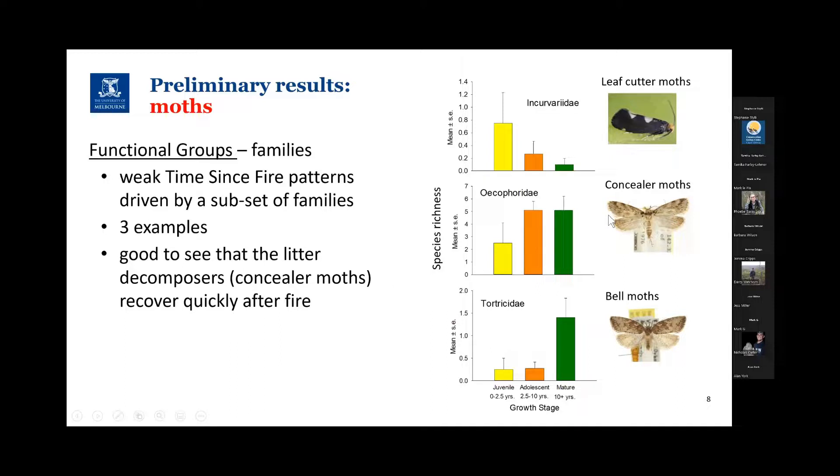The other take-home message from this slide is because there are groups of species that reach their highest number of species at different times since fire, this lends some support for a pyrodiversity biodiversity management approach. In other words, maintaining a mosaic of different growth stages at the landscape scale.